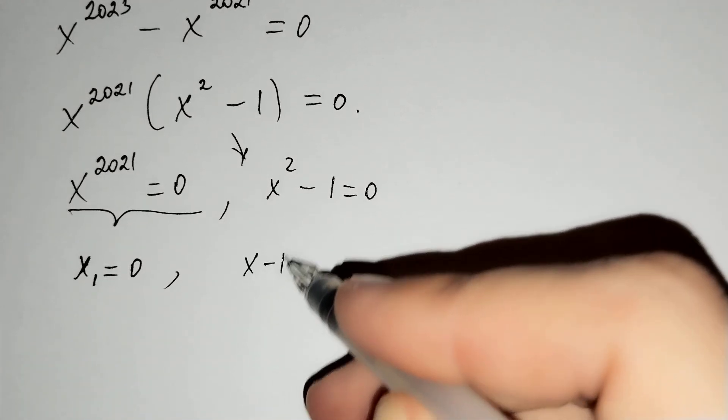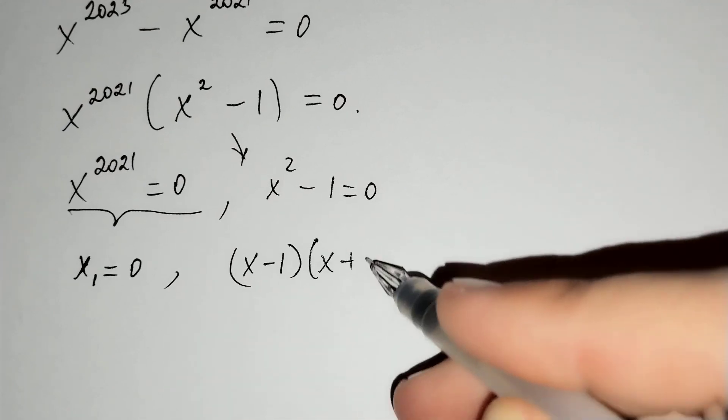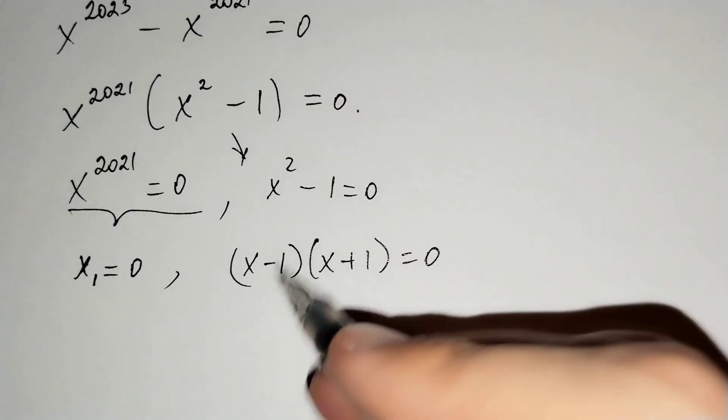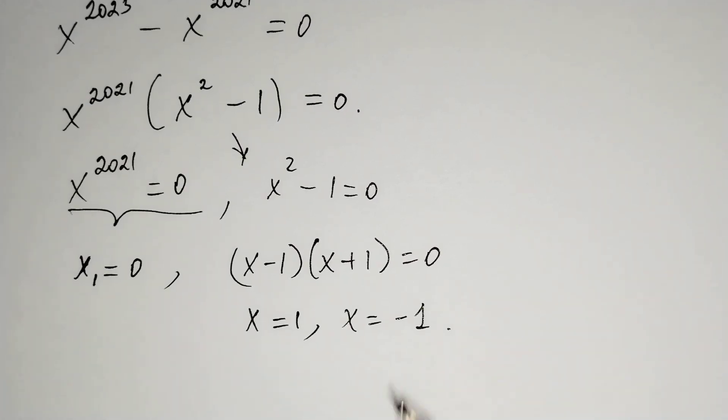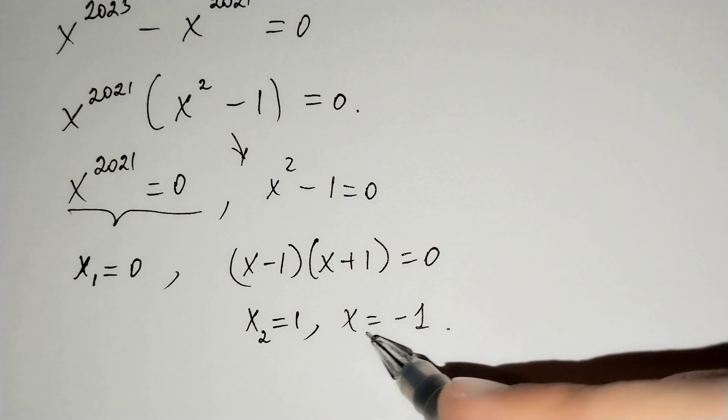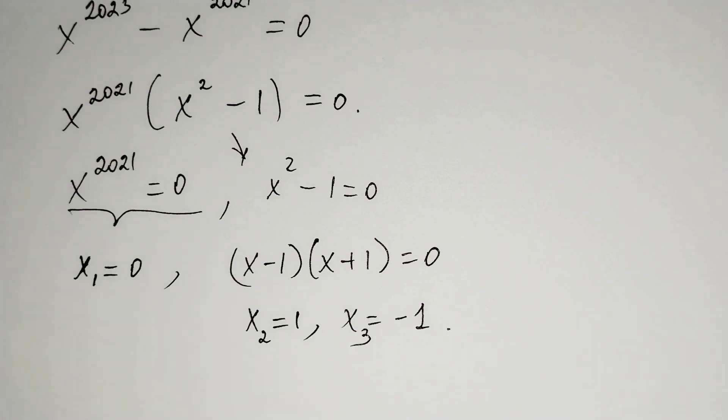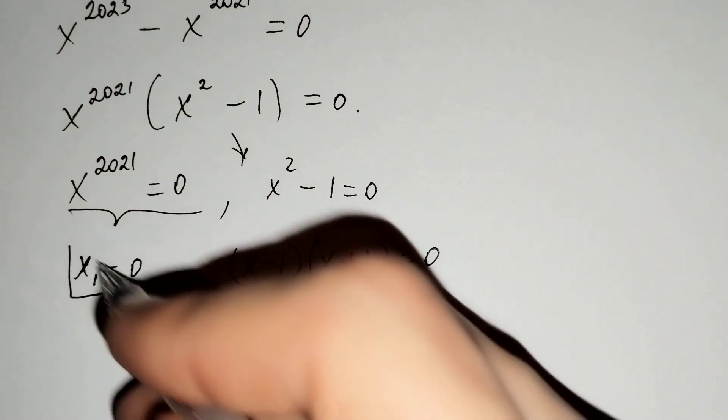It means x minus 1 times x plus 1 equals to 0, and x equals to 1 and x equals to negative 1. This is x2 and x3. We have three answers.